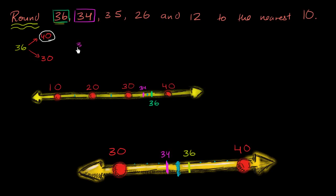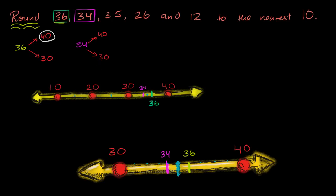We have two options. The multiple of 10 above 34 is 40, and the multiple of 10 below 34 is 30. Which one is it closer to? It's only 4 away from 30 and 6 away from 40. So it's closer to 30 — we are going to round down to 30.